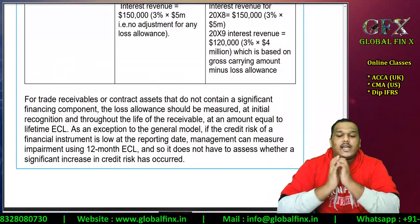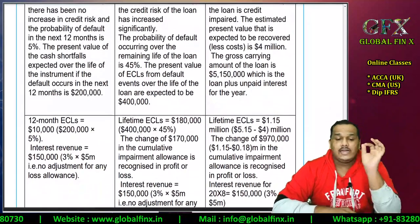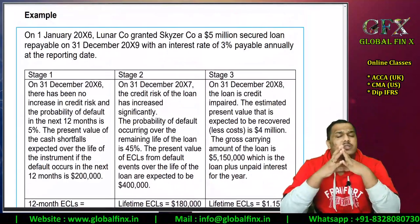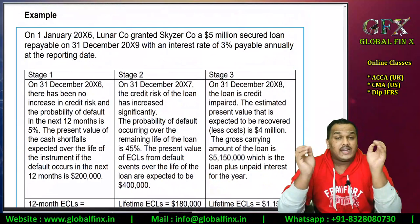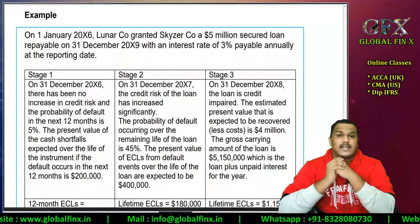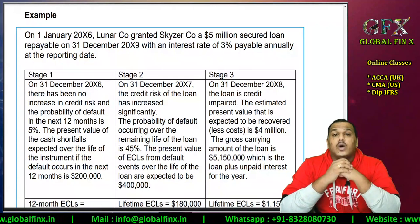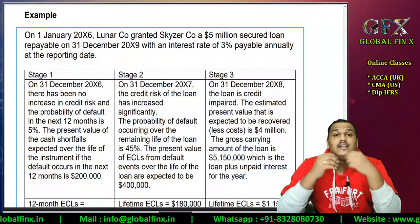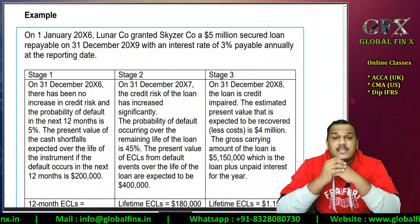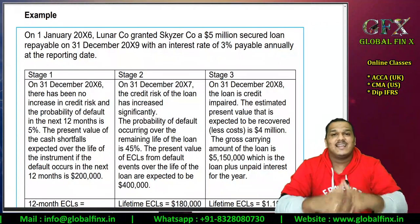So if management voluntarily chooses the 12-month expected losses model, that is absolutely acceptable. Usually for trade receivables we go with lifetime expected losses, but switching to 12 months is possible. With that, I'll wind up this lecture on ECL and credit impairment. I hope this concept is very clear for you guys and you will not have any issues in the examination. Keep smiling, take care, stay healthy, stay safe, and all the best for your exams. Bye-bye.